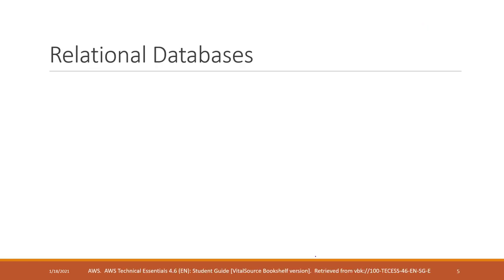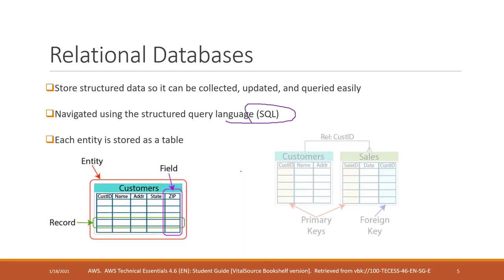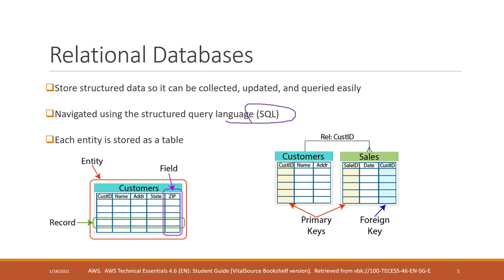We also mentioned relational databases. A relational database is used to store structured data, and we can use SQL to make queries from the data. It is called a relational database because we have primary keys and foreign keys, and tables can be related with each other — that is why it is called a relational database.